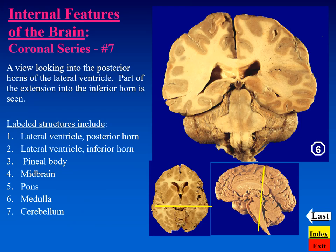In the last section of our coronal series, we can see we're peering into the posterior limit of the lateral ventricle — the posterior horn — with its continuation going into the temporal lobe as the inferior horn. In the midline, just above the midbrain, is the pineal body at the posterior part of the diencephalon. Below that, we have the midbrain, pons, and medulla cut in this coronal plane. And finally, the two cerebellar hemispheres are also in view.